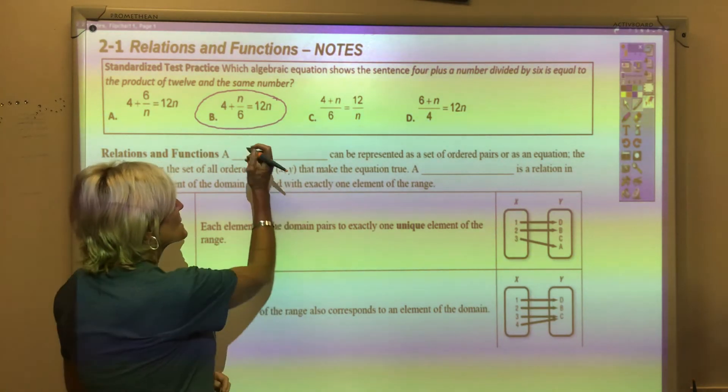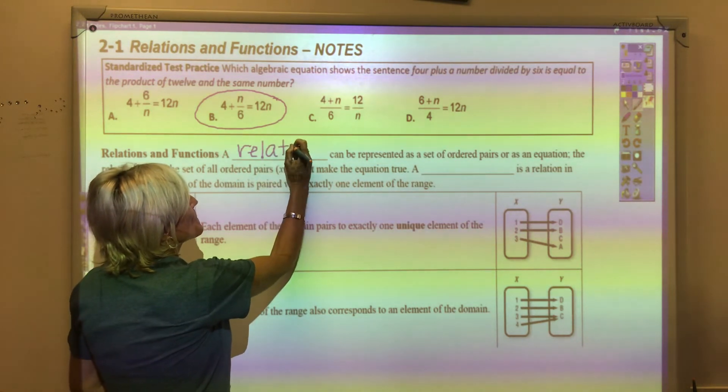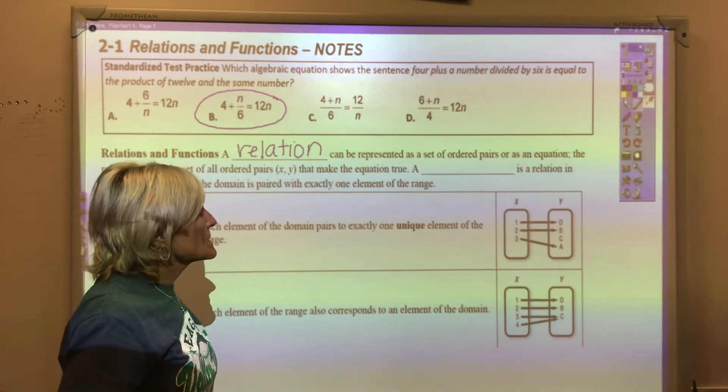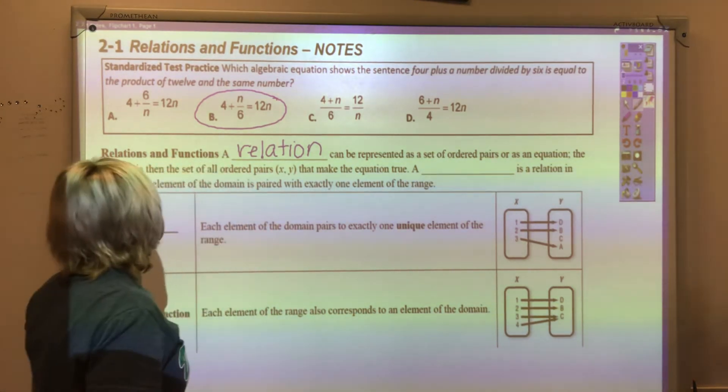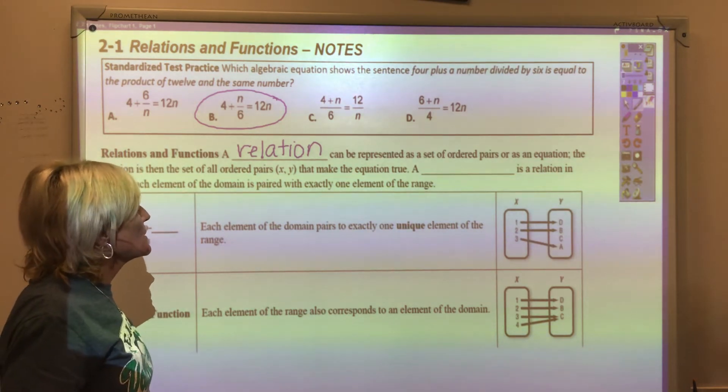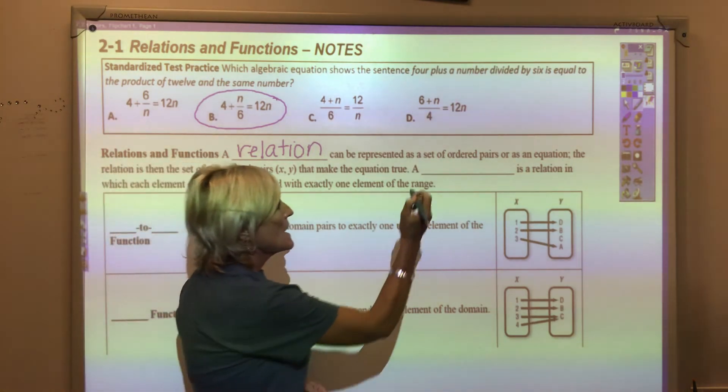A relation can be represented as a set of ordered pairs or as an equation. The relation is then the set of all ordered pairs (x, y) that make the equation true.